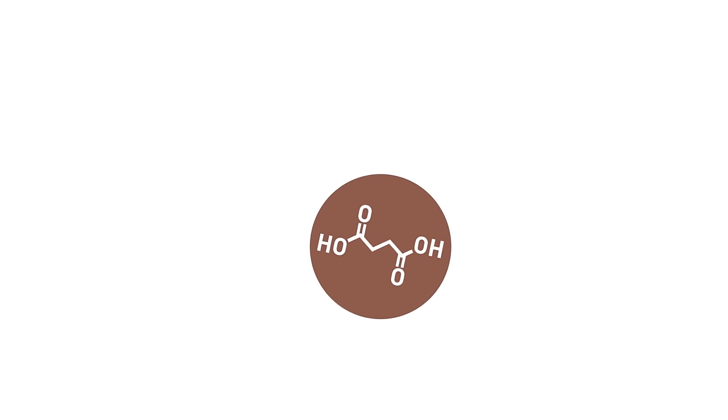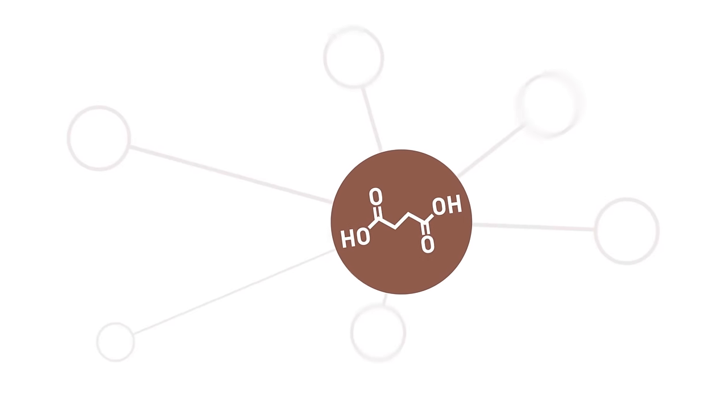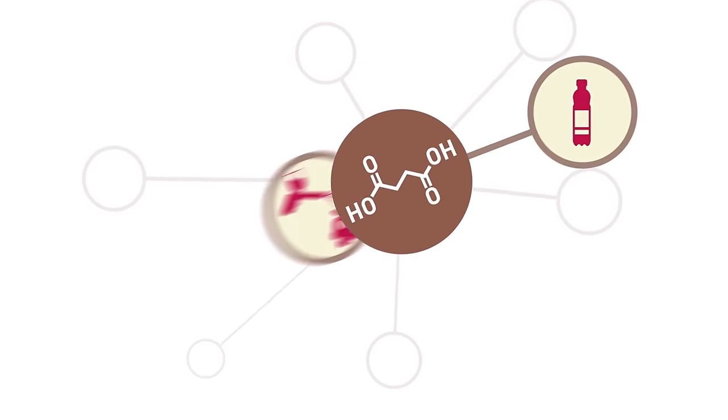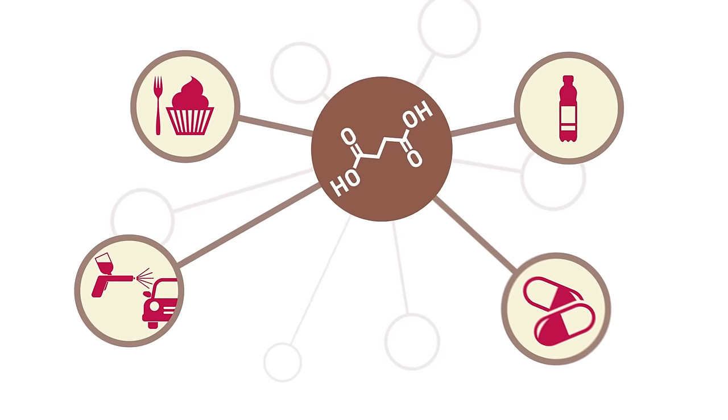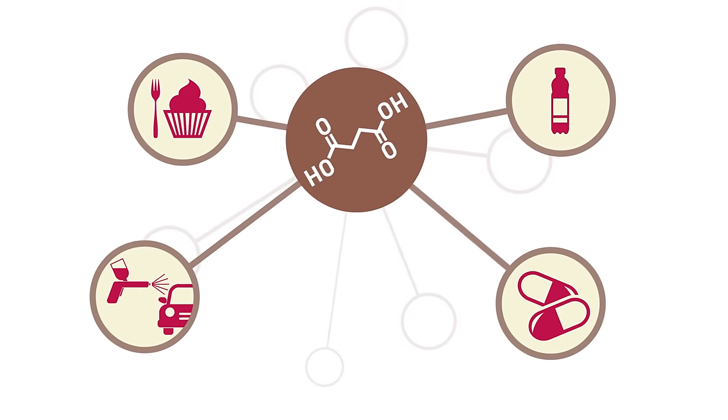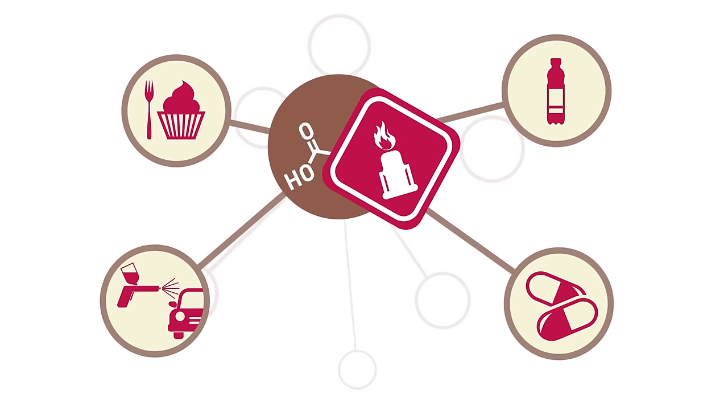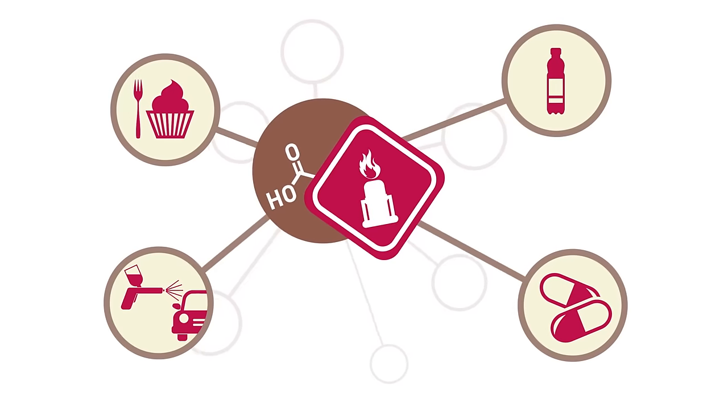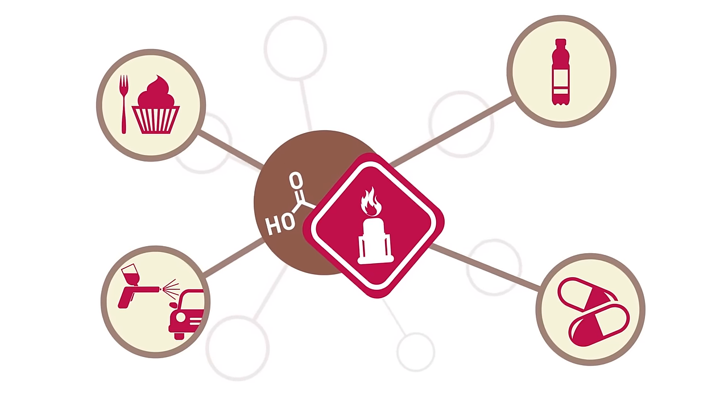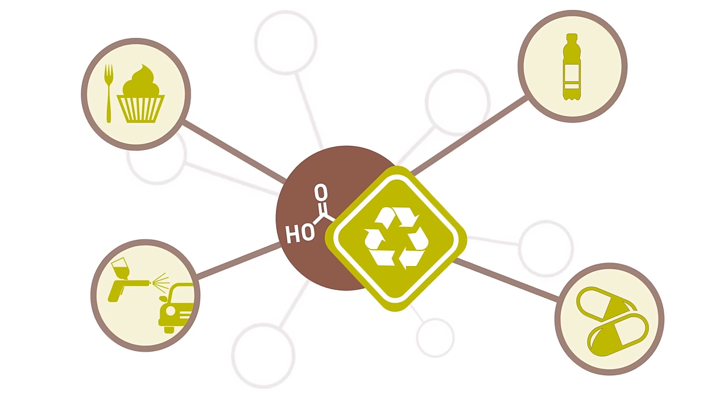Succinic acid is a chemical monomer that is being used in many applications such as plastics, coatings, nutrition and life science products. It has traditionally been produced by petrochemical routes but can by a novel biochemical process be produced based on renewable resources.